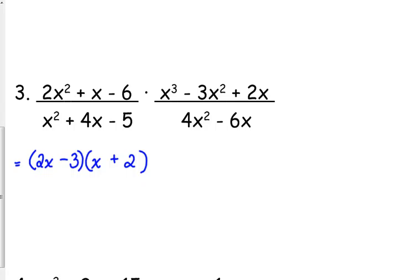The second numerator, I need to begin by taking out a GCF. For the sake of saving myself some space, I'm going to take out the GCF right here. I'm going to take out the x. That's going to leave me with x squared minus 3x plus 2. And then I'm going to go back to where I was factoring down here and factor the trinomial. x squared minus 3x plus 2 factors into x minus 2 times x minus 1.